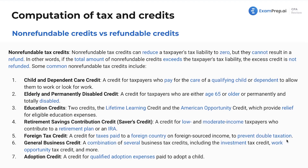If you receive a dividend from a foreign entity, that foreign country will often withhold an amount, and then the US government will want a portion too — that would be double taxation on that dividend, which is effectively triple taxation since the company already paid tax on the money before distributing it. So the foreign tax credit covers taxes paid to a foreign country on that foreign-sourced income. We've also got the general business credit — a combination of several business tax credits including the investment tax credit, work opportunity tax credit, and others. And lastly for non-refundable credits, we've got the adoption credit, a credit for qualified adoption expenses paid to adopt a child.